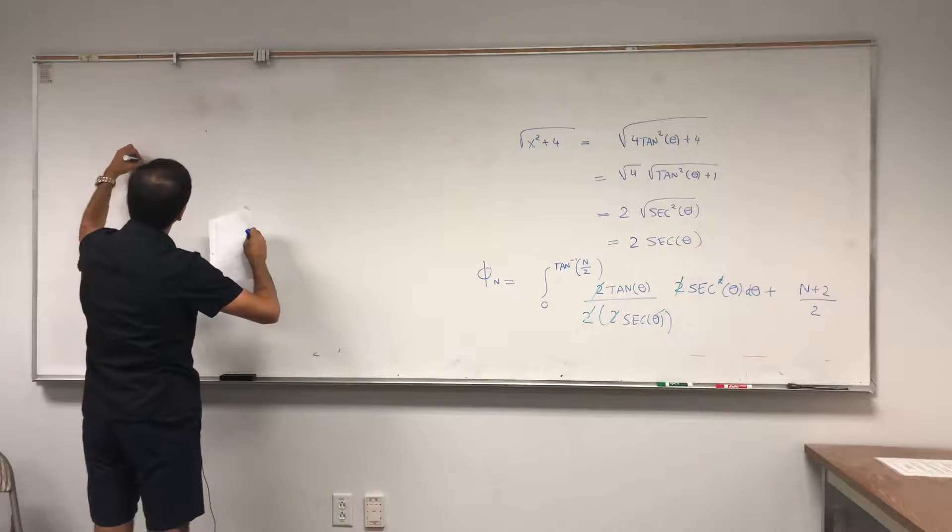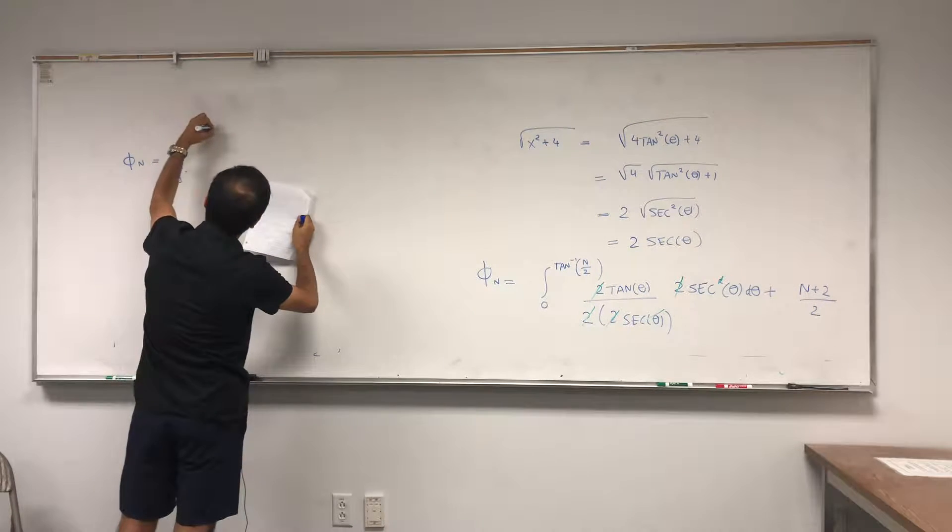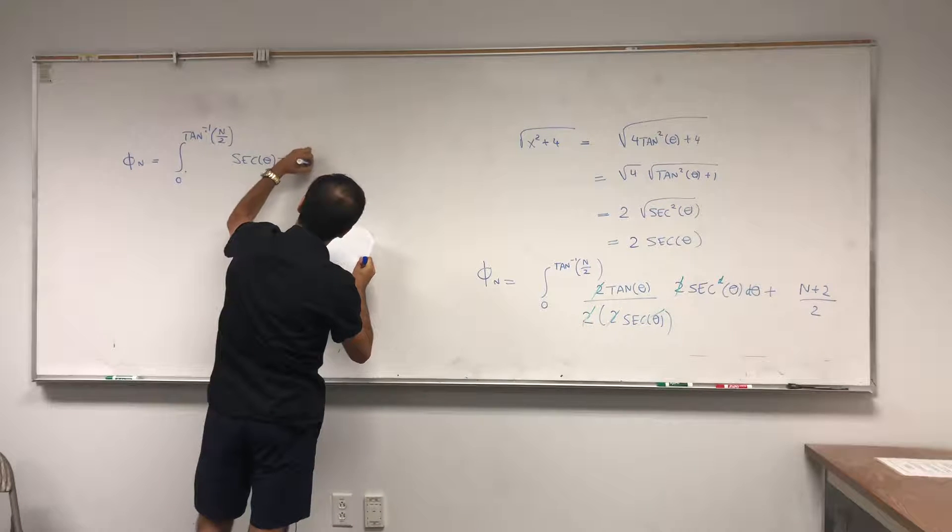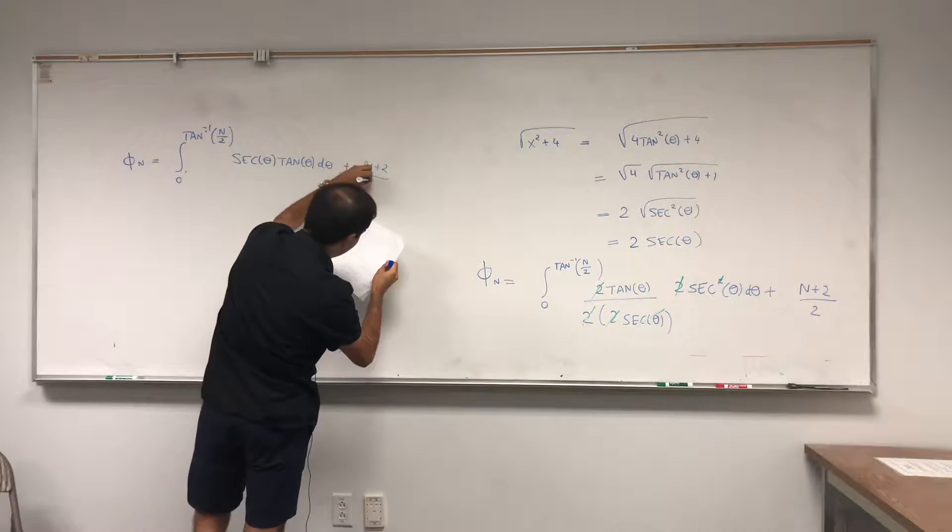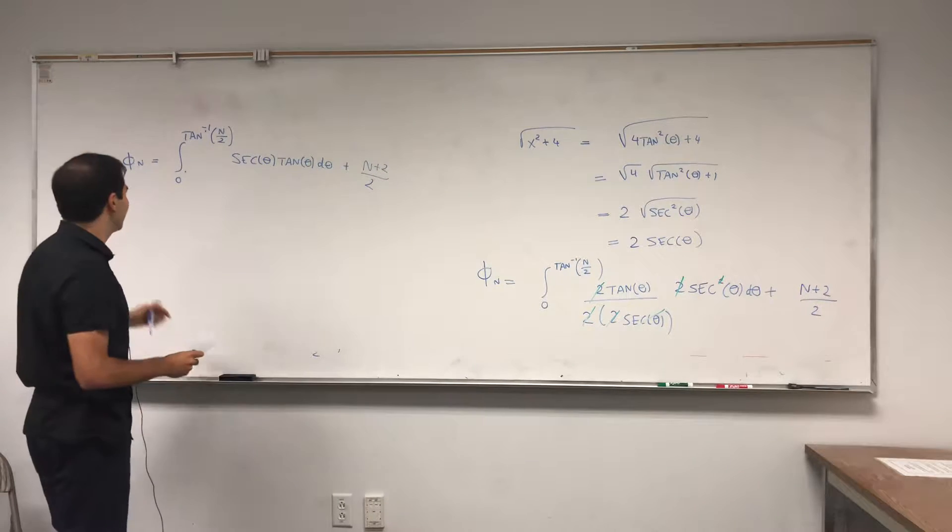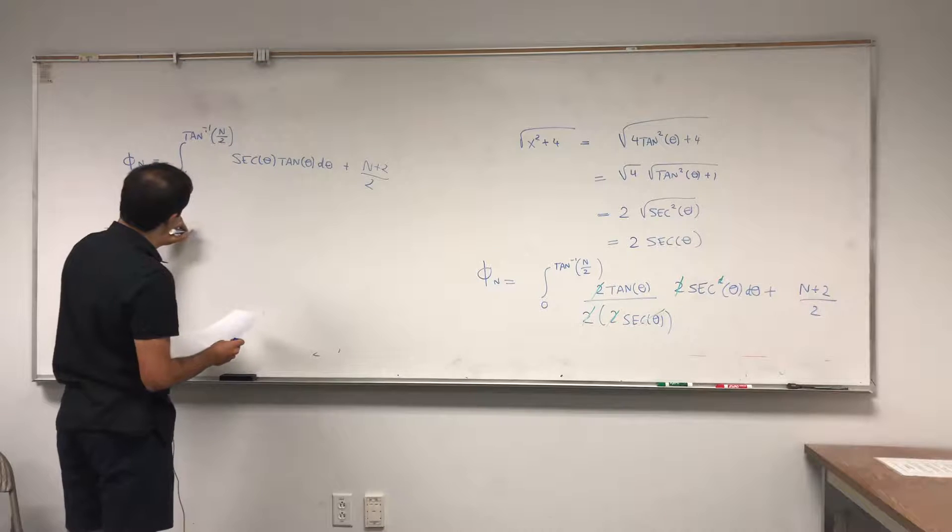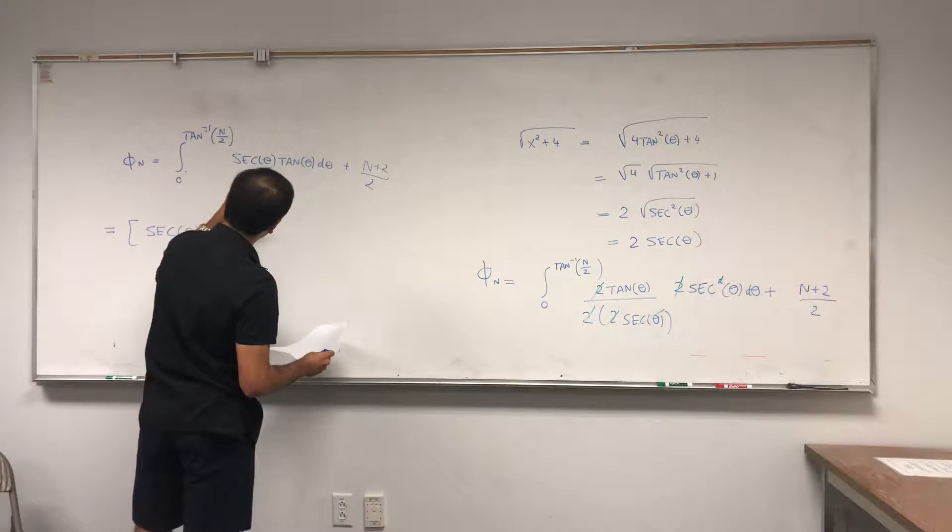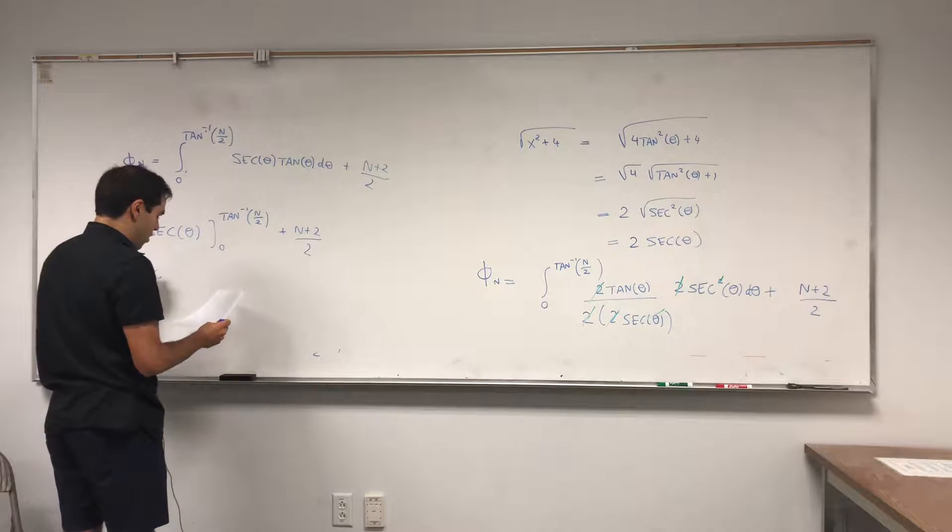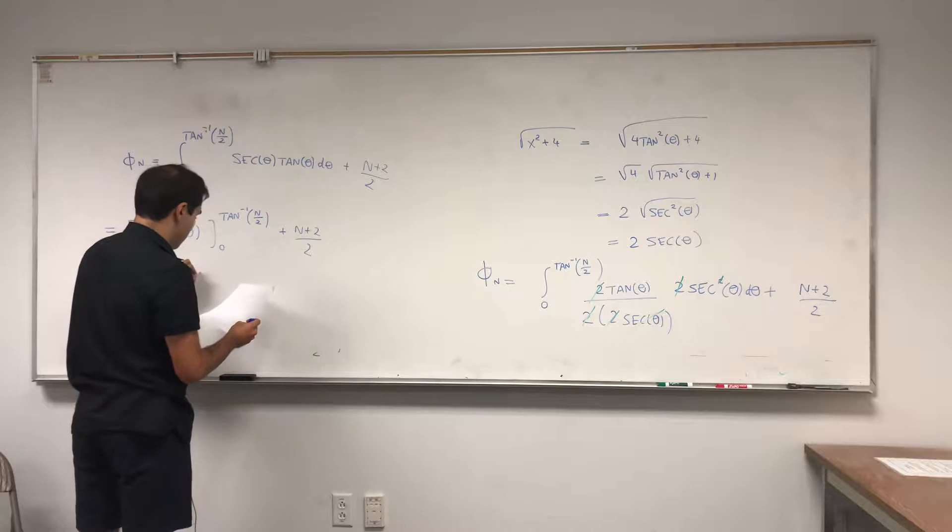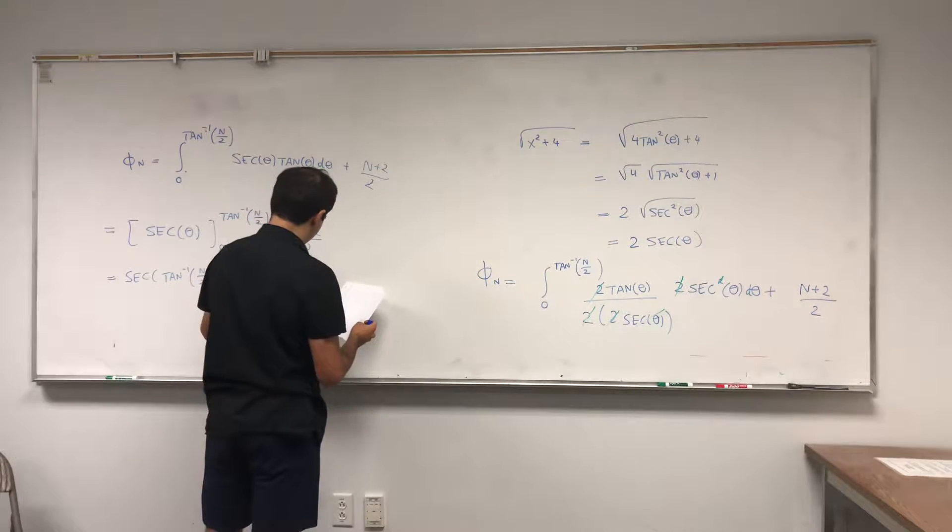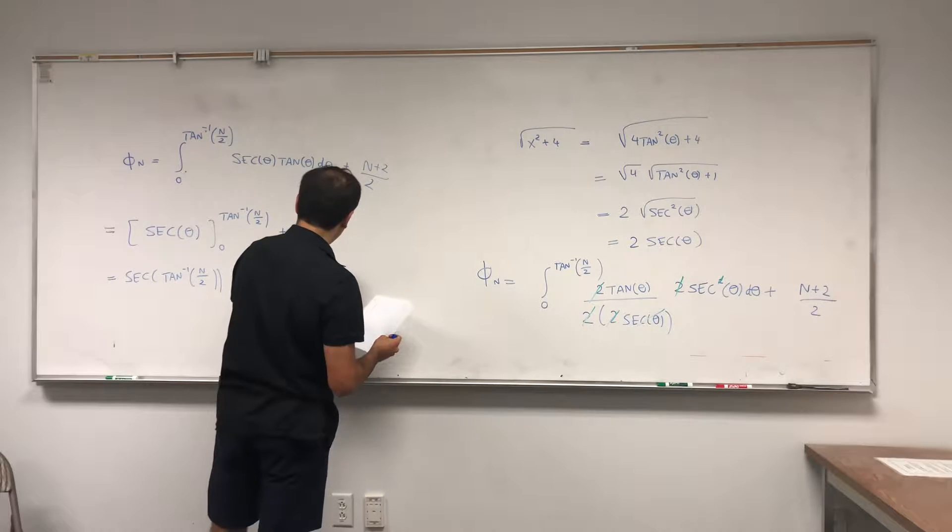So phi n equals the integral from 0 to arc tangent of n over 2, secant theta tangent theta d theta, plus n plus 2 over 2. And the nice thing is this one, the antiderivative of secant theta tangent theta is just secant, so you're just left with secant theta from 0 to arc tangent of n over 2, plus n plus 2 over 2. So you're left with secant of arc tangent of n over 2, minus secant of 0, plus n plus 2 over 2.